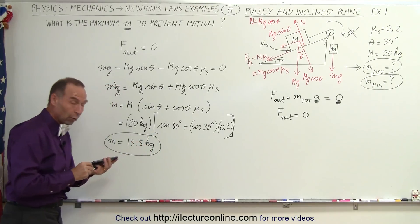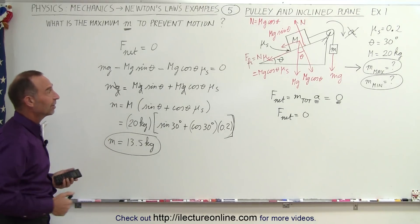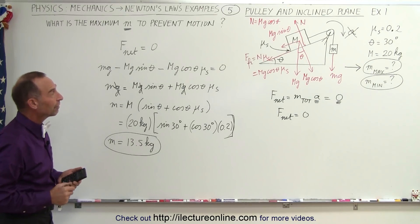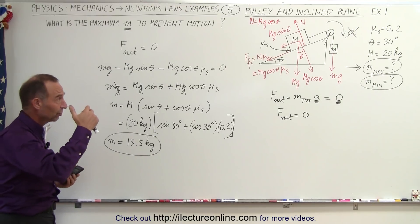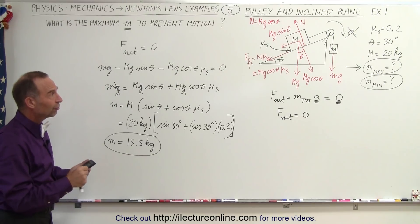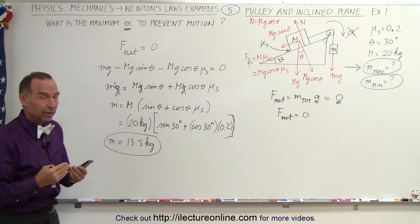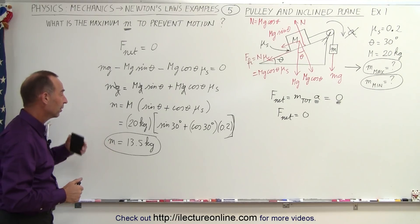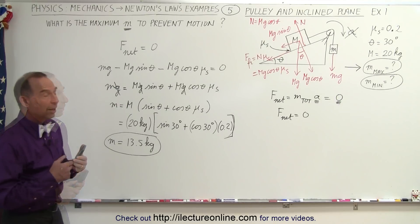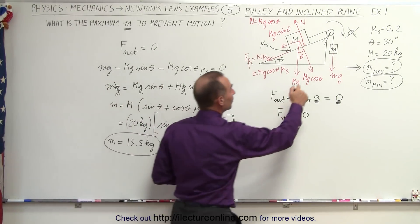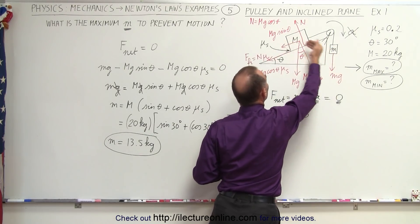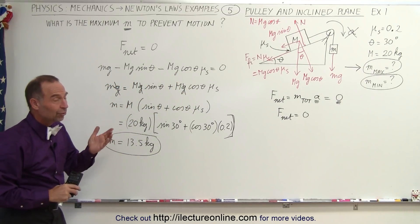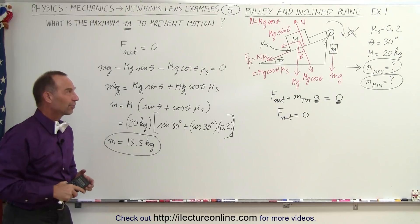So the maximum little m can be is 13.5 kilograms. To get the whole system to accelerate in that direction from rest, you'd need to overcome static friction, meaning the mass would need to be just over 13.5 kg. Once moving, the kinetic coefficient of friction — which is usually less — takes over and the system accelerates at a higher rate. In our next video, we'll find the minimum m to prevent acceleration in the opposite direction.